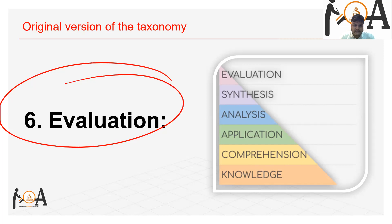The sixth and final level is Evaluation. Evaluation involves presenting and defending opinions by making judgments about information, the validity of ideas, or the quality of work based on a set of criteria. Its characteristics include judgments in terms of internal evidence and external criteria. For example: which kind of apples are best for baking a pie, and why? That is evaluation. So the original taxonomy is: Knowledge, Comprehension, Application, Analysis, Synthesis, and Evaluation.